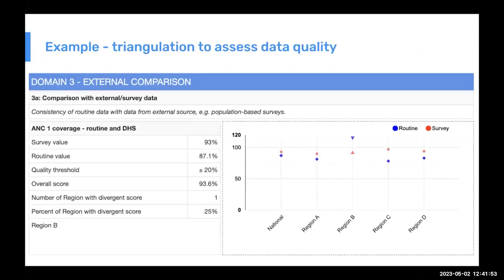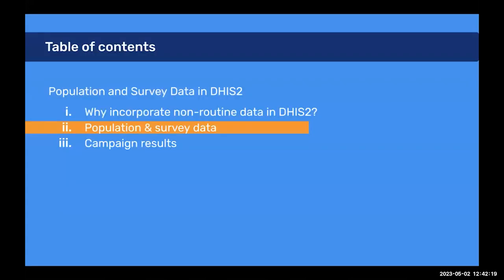Another example is data quality. One way to assess data quality is to do triangulation. This is from the WHO Data Quality Review framework, which includes an element where you look at your coverage indicators based on routine reporting versus coverage indicators from household surveys. So let's look at how this could be done in DHIS2.